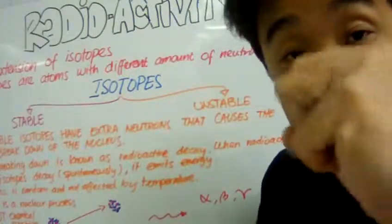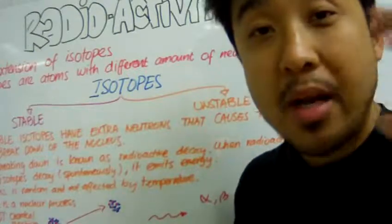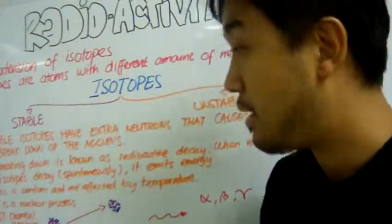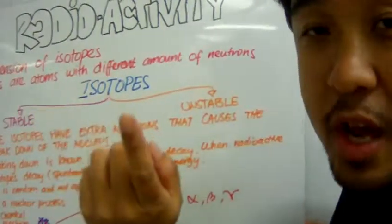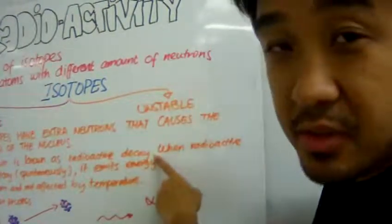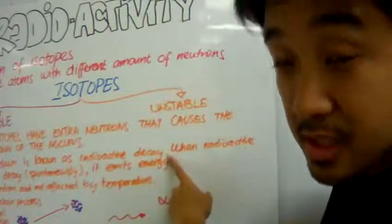And when it's unstable, the nucleus will break down. And this breaking down process is known as radioactive decay.